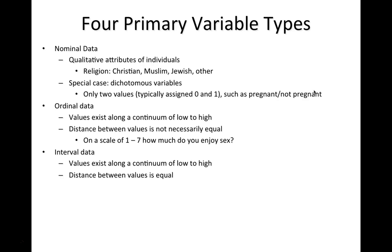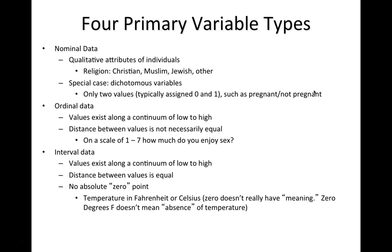Interval data also exists along a continuum of low to high, but the distance between values is equal. In interval data there's no absolute zero point. A common example is temperature in Fahrenheit or Celsius, where zero doesn't mean an absence of temperature — zero degrees Fahrenheit is still an actual temperature reading, not the absence of that characteristic.